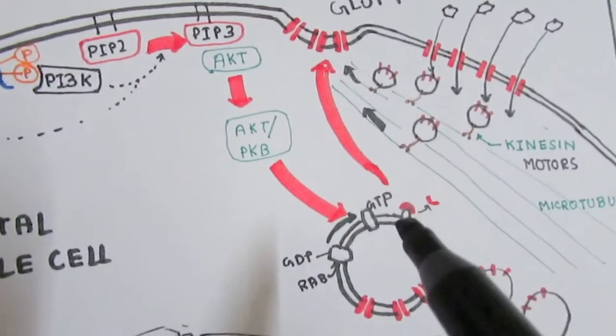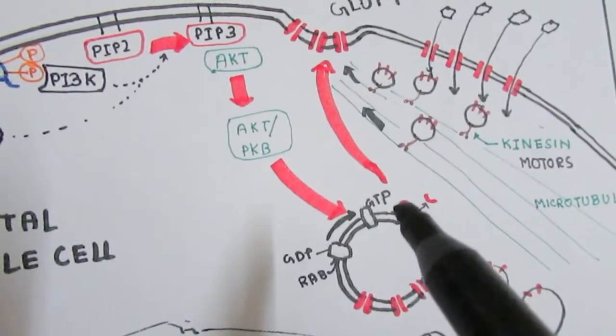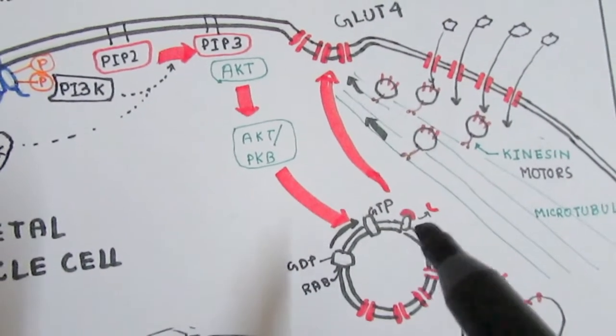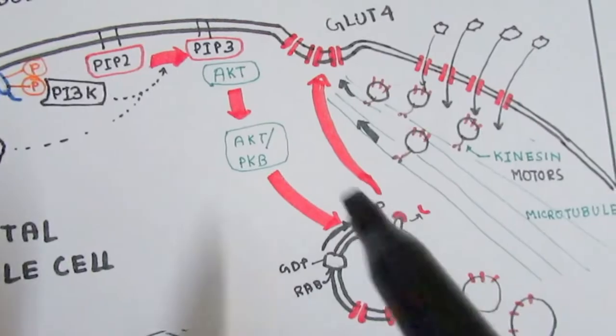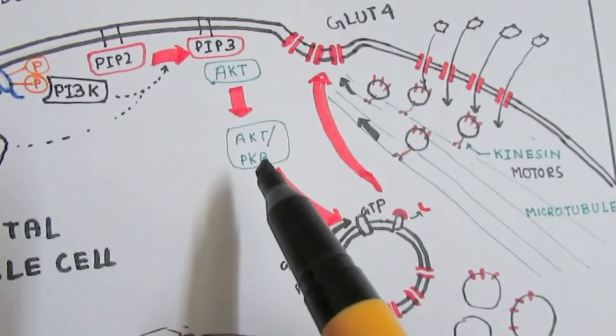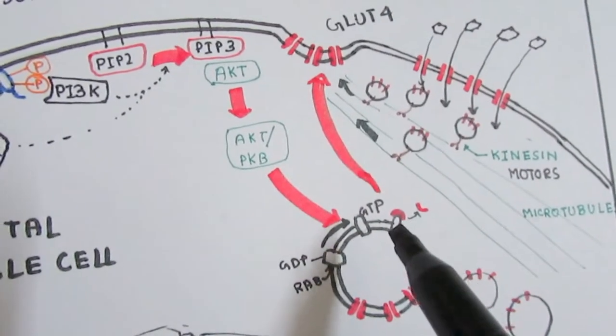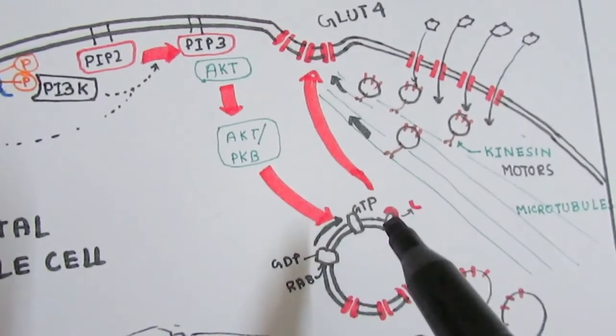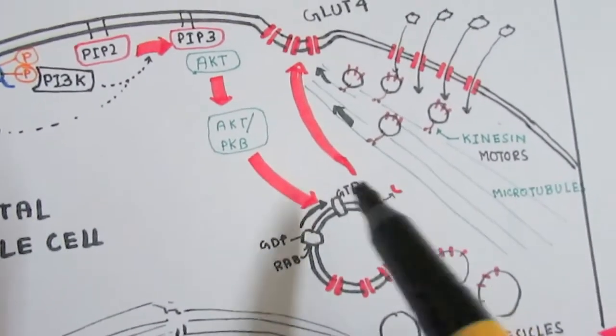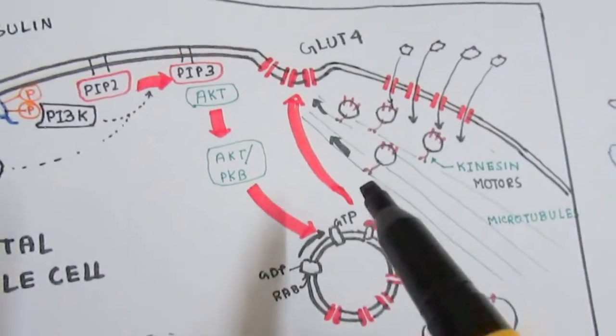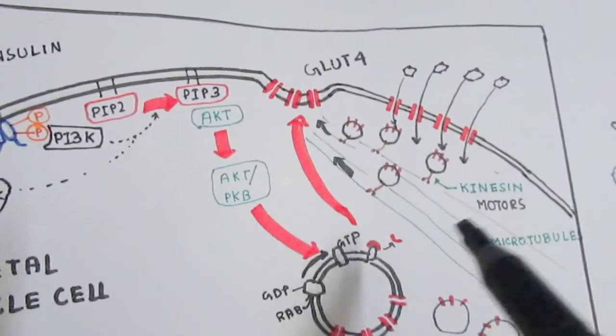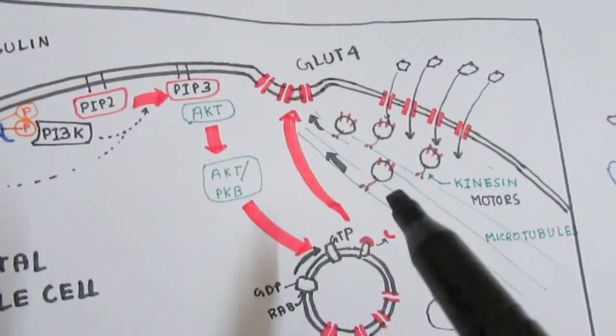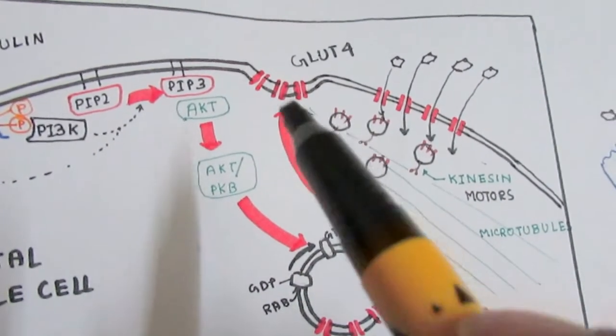RAB in GTP-bound form is active. In the normal state, the adapter proteins of these vesicles are inhibited by a CAP protein. PKB phosphorylates this CAP, and the CAP falls off. When the CAP falls off, these vesicles can be loaded onto kinesin motors. These kinesin motors are trucks that carry the vesicles to their desired destination.